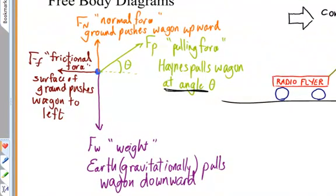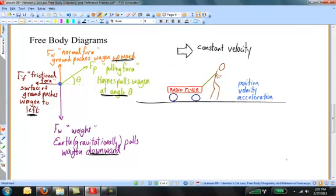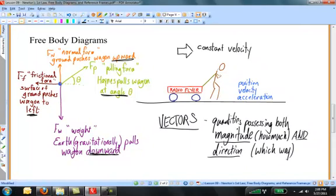Also notice, there's a direction associated with each of these forces. There's the pulling force, which acts at an angle theta. There's the normal force, which is pushing upward. There's the weight, which is in the downward direction. There's the frictional force, that's dragging the wagon to the left. Whenever objects interact in this way, there's a direction associated with the force. We'll come to call these quantities vector quantities, vectors having both a strength and a direction. We will come to contrast vector quantities with something called scalar quantities that possess only magnitude. Examples of vectors are things like forces, velocity, acceleration. Things that are scalar would be things such as temperature, time.